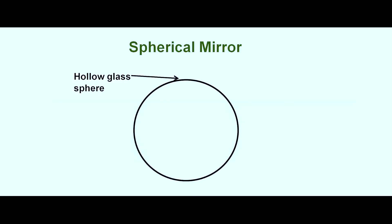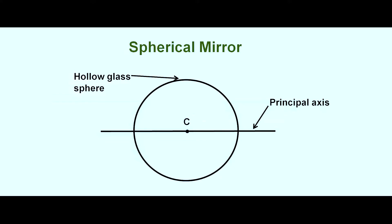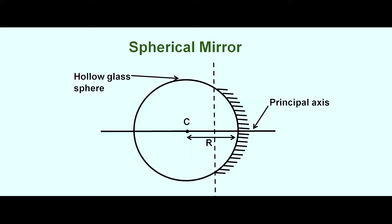Spherical mirrors are actually part of a hollow sphere — a hollow sphere made up of glass. The diameter of this hollow glass sphere is called the principal axis. The center of this sphere is called the center of curvature. The radius of this sphere is called the radius of curvature. If you silver — that is, paint — the outer bulging part of the sphere and break this part, then this becomes a concave mirror. The side which is curved inward is the reflecting surface.